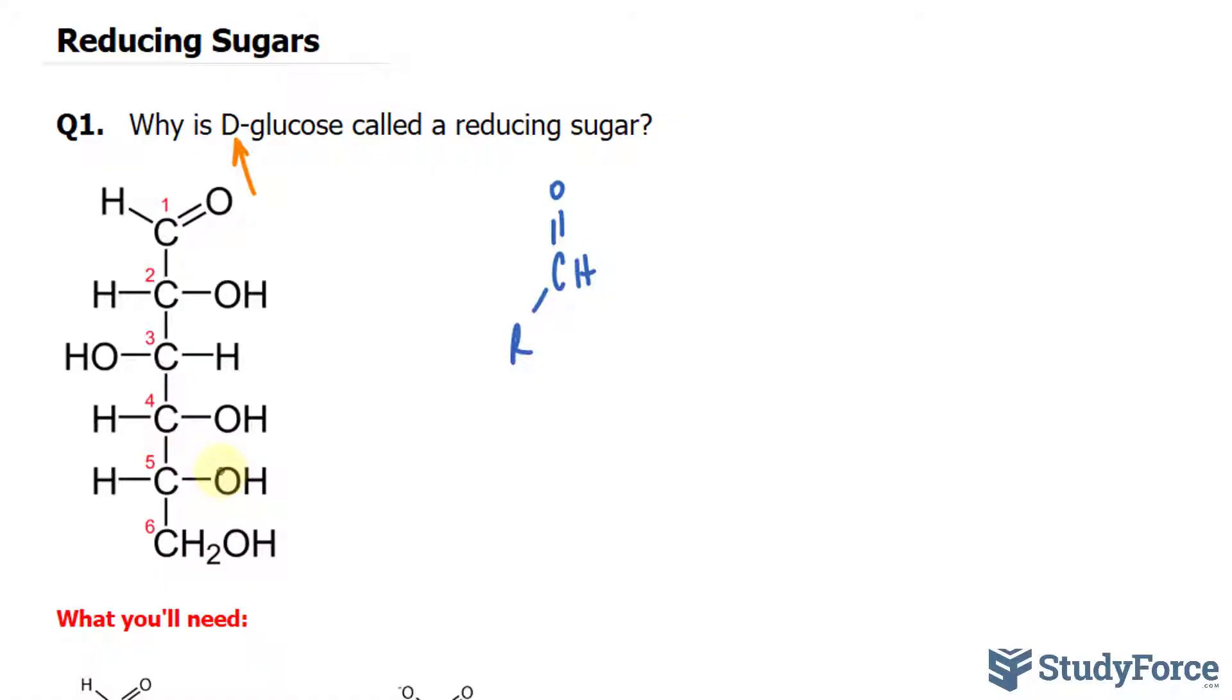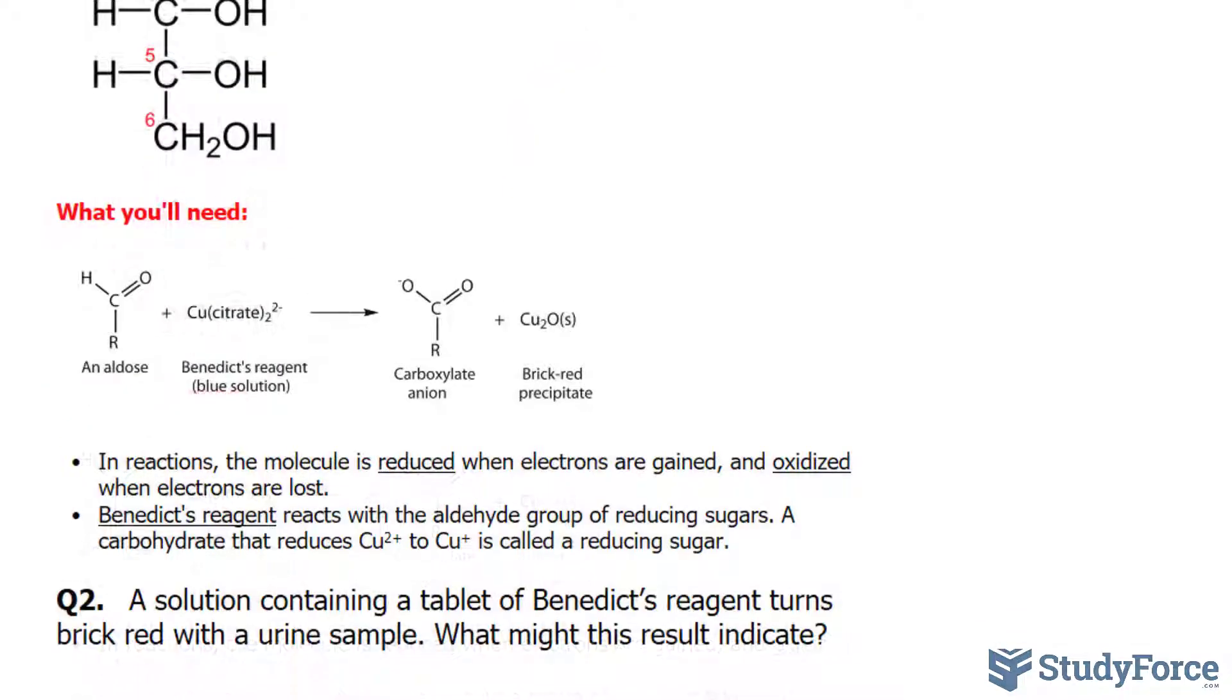Now they're asking, why is D-glucose a reducing sugar? Well, if we mix D-glucose with Benedict's reagent, Benedict's reagent is a compound used to react with the aldehyde group of a sugar.